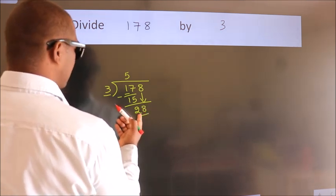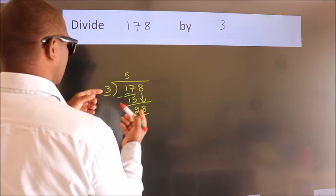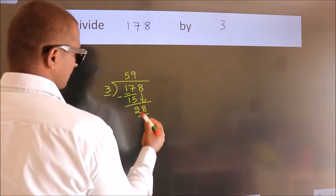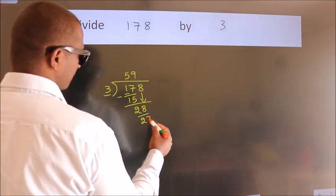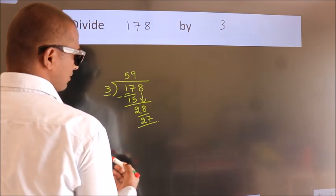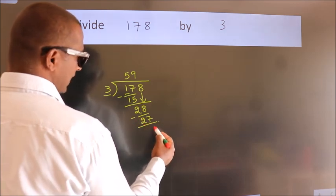A number close to 28 in the 3 table is 3 nines, 27. Now we subtract. We get 1.